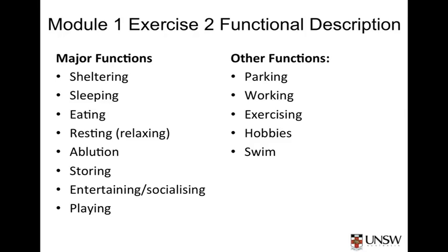Note that these functions do not say what sort of dwelling we're considering. They could equally apply to a shared house, a small house, a large house, a large mansion, a small apartment, or perhaps even a tent — although if the tent is the physical solution, we might have to forget about the swimming function, except perhaps in heavy rain.